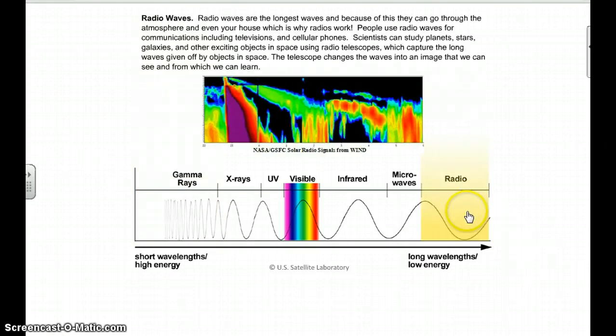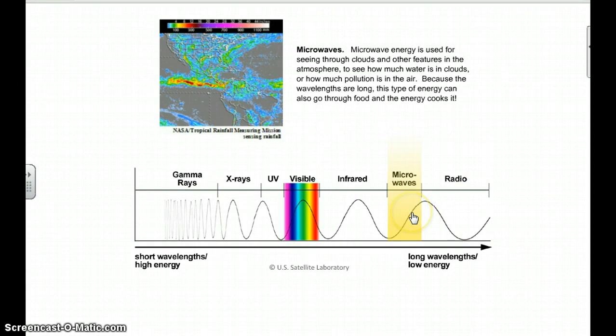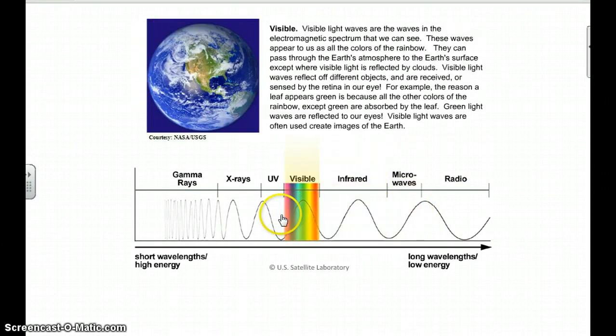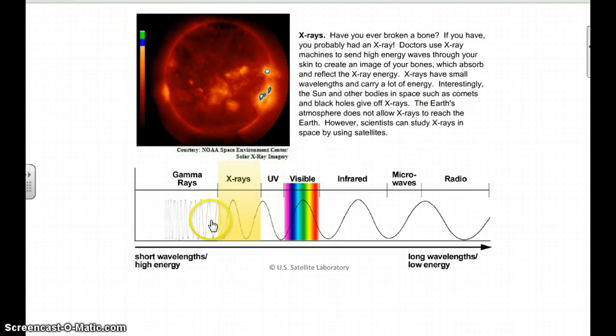So that's our electromagnetic spectrum right there, starting with the least, which is radio, microwaves a little bit more, infrared a little bit more, the visible light that we can see a little bit more. Here we get into the dangerous areas, the UV, the x-rays, and the gamma rays. Those guys are pretty dangerous.